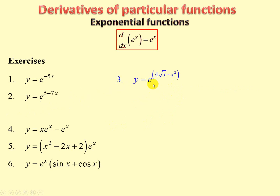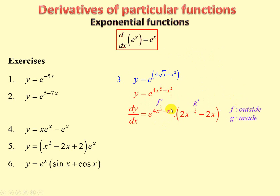Exercise 3: e to the square root of 4x, written as 4x to the half. We get e to the same exponent, since the outside function is e to the u. Then the derivative of the inside function: multiply down by half, take 1 off the power of a half, giving a power of minus a half, times 2 from differentiating 4x to the half.